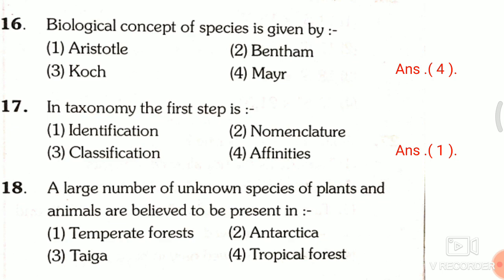Question 18: A large number of unknown species of plants and animals are believed to be present in — first, temperate forest; second, Antarctica; third, taiga; fourth, tropical forest. The correct answer is the fourth one, that is tropical forest.